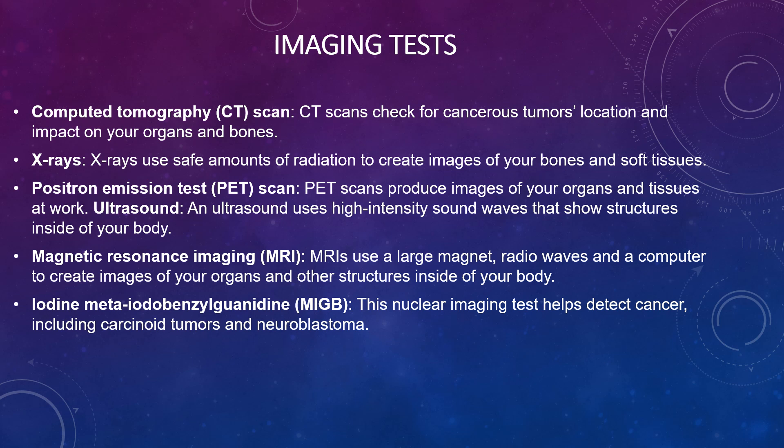Imaging tests are also available, such as CT scans, X-rays, PET scans, ultrasounds, nuclear medicine imaging, and meta-iodobenzylguanidine (MIBG) tests, which help detect carcinoid tumours and neuroblastoma. All these tests are used to check the structure and create images of bones, soft tissues, and other areas.